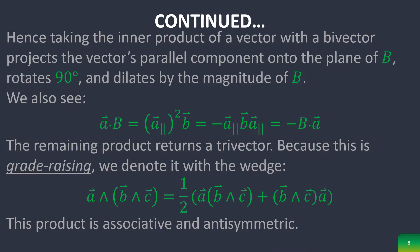One can view this when we take the inner product of a vector and a bivector as projecting the vector's parallel component onto the plane of B, rotating it by 90 degrees, and dilating it by the magnitude of bivector B.